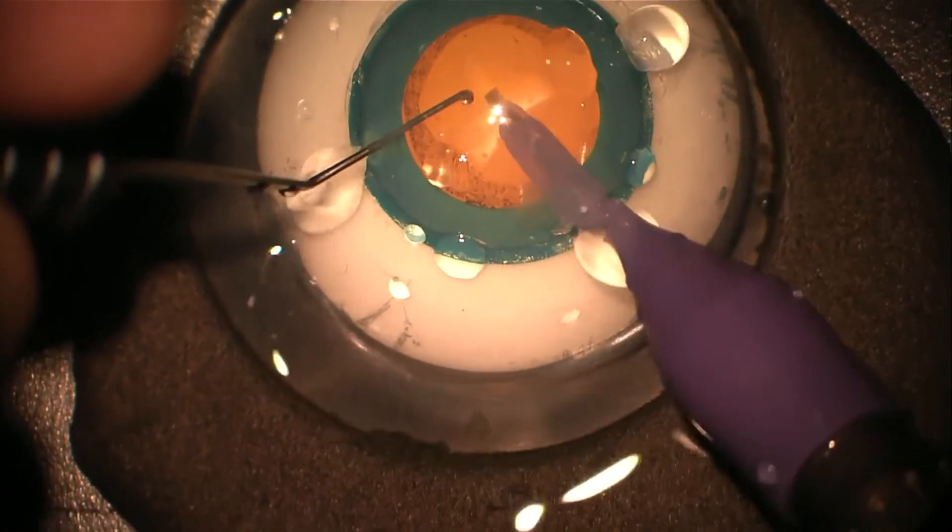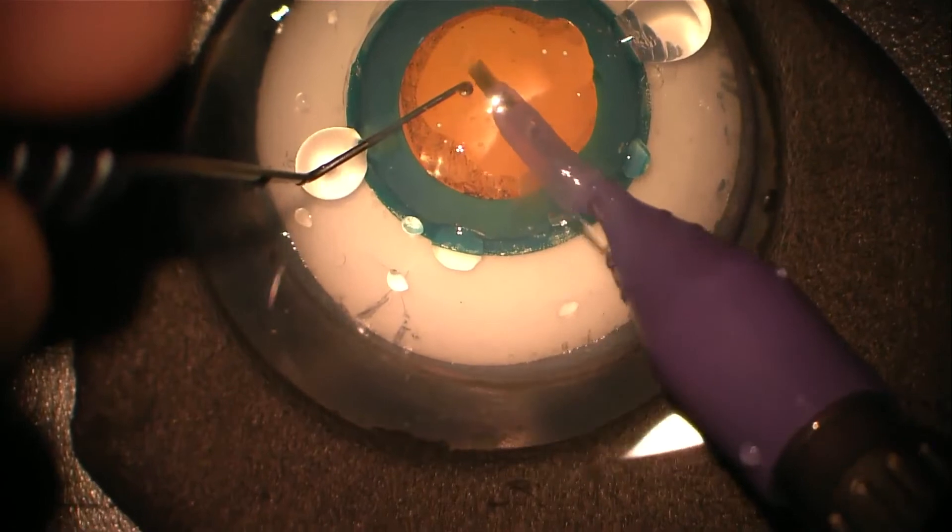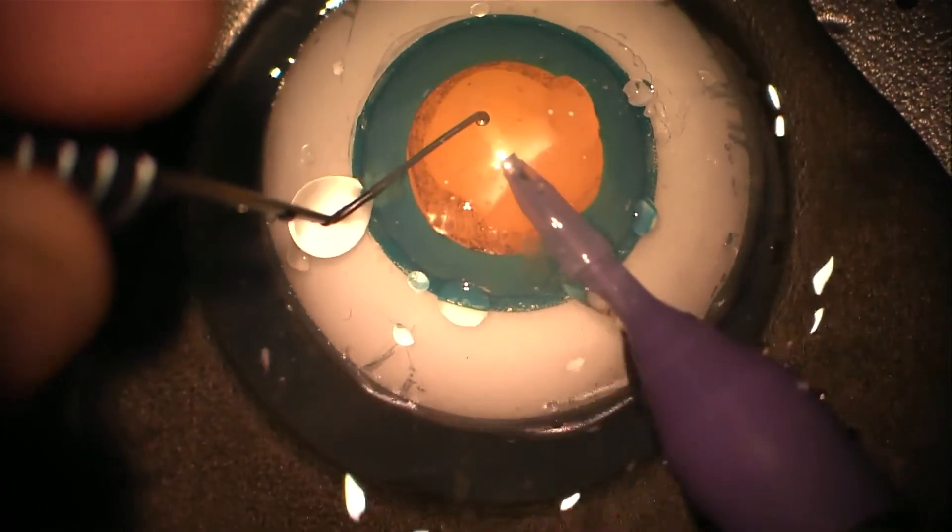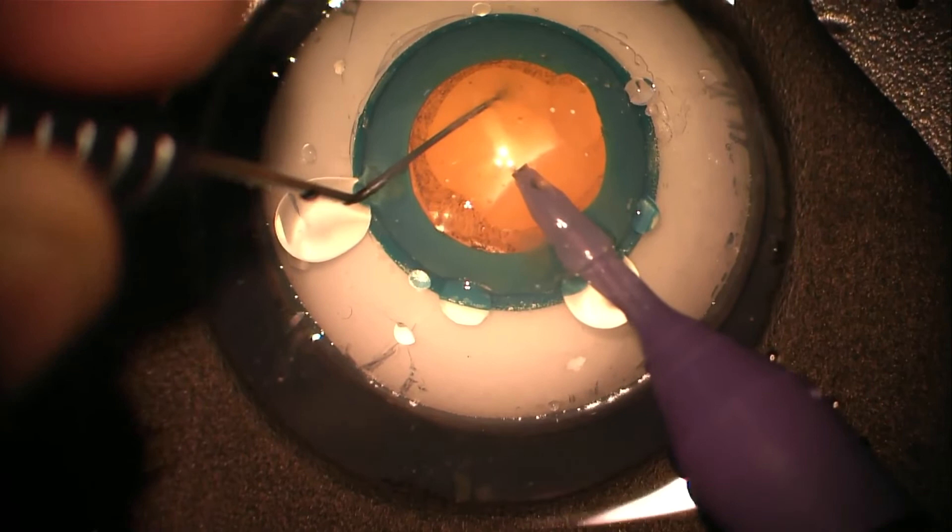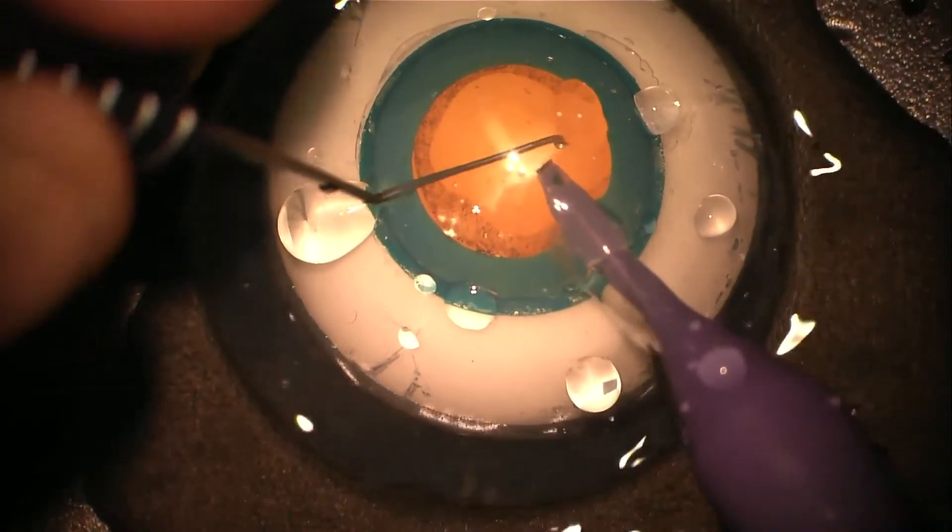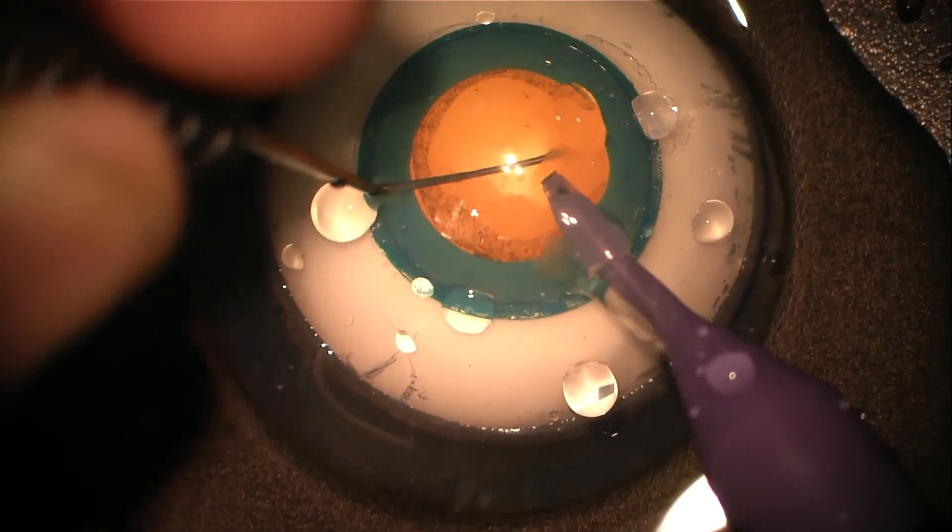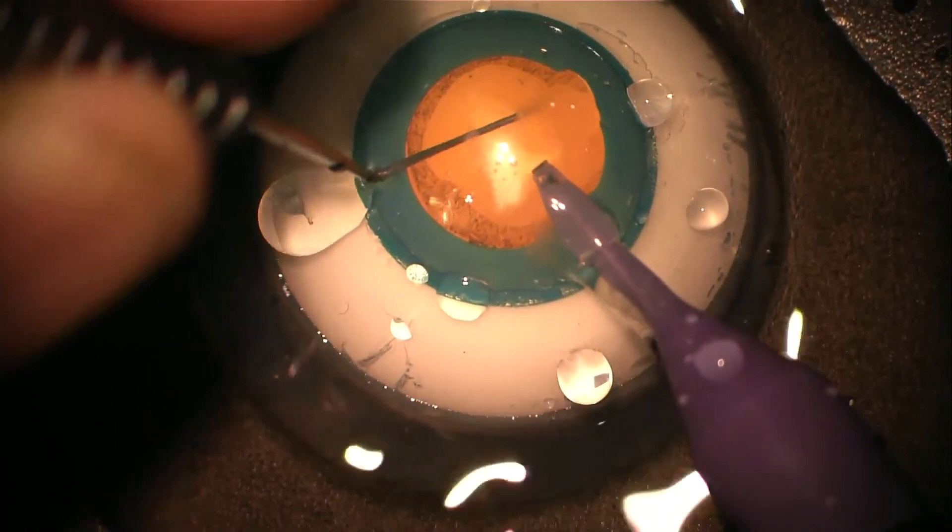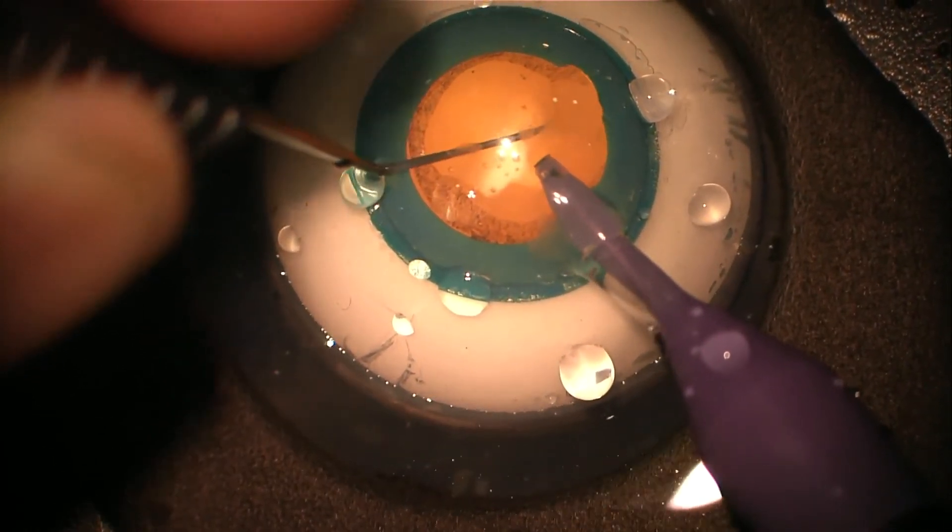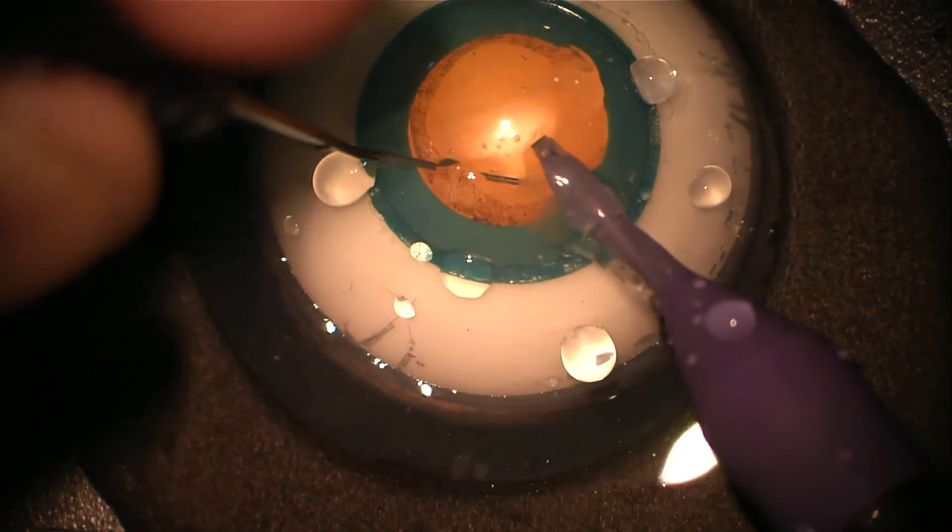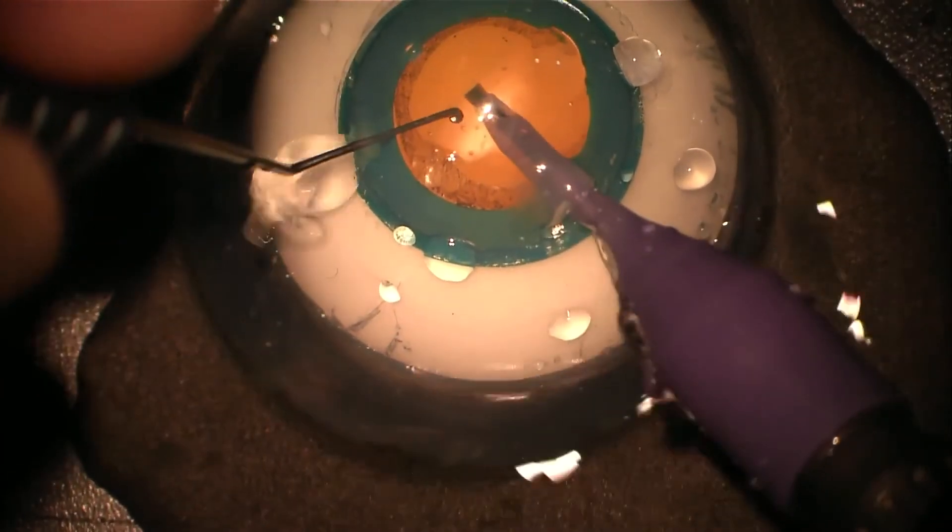Using that two-handed technique to manipulate the lens without putting excessive pressure on the lens, and just rotating again to complete the final bit of sculpting before the nucleus is cracked.